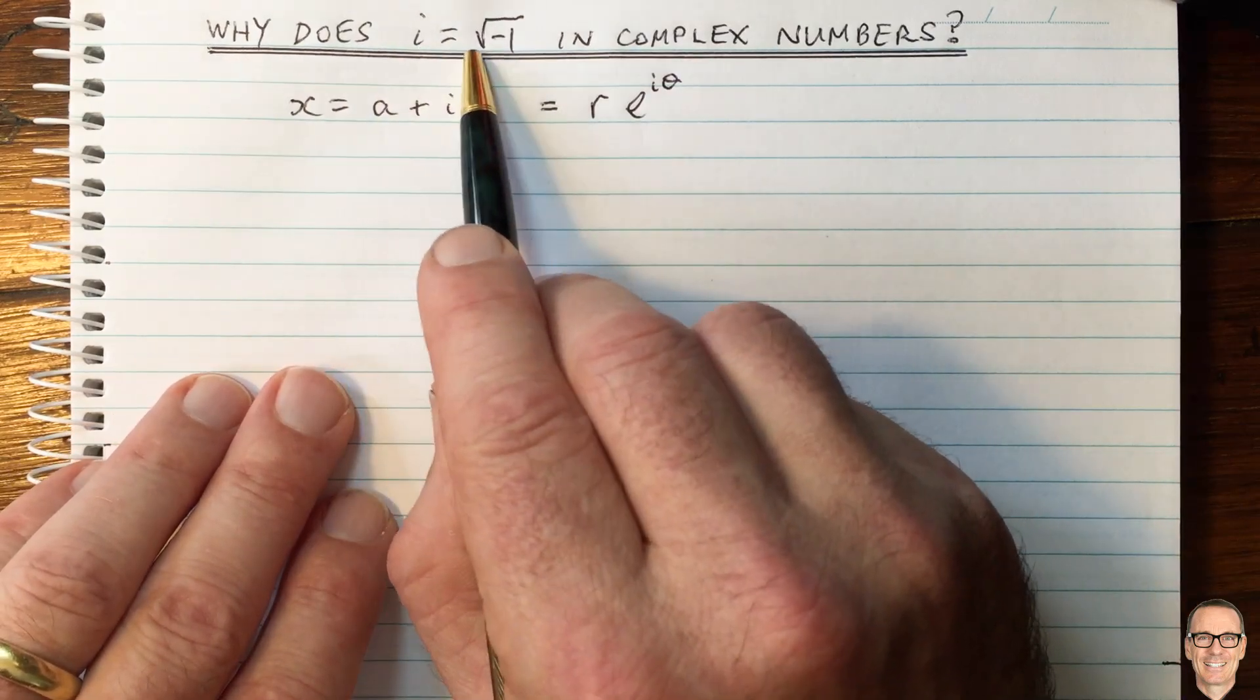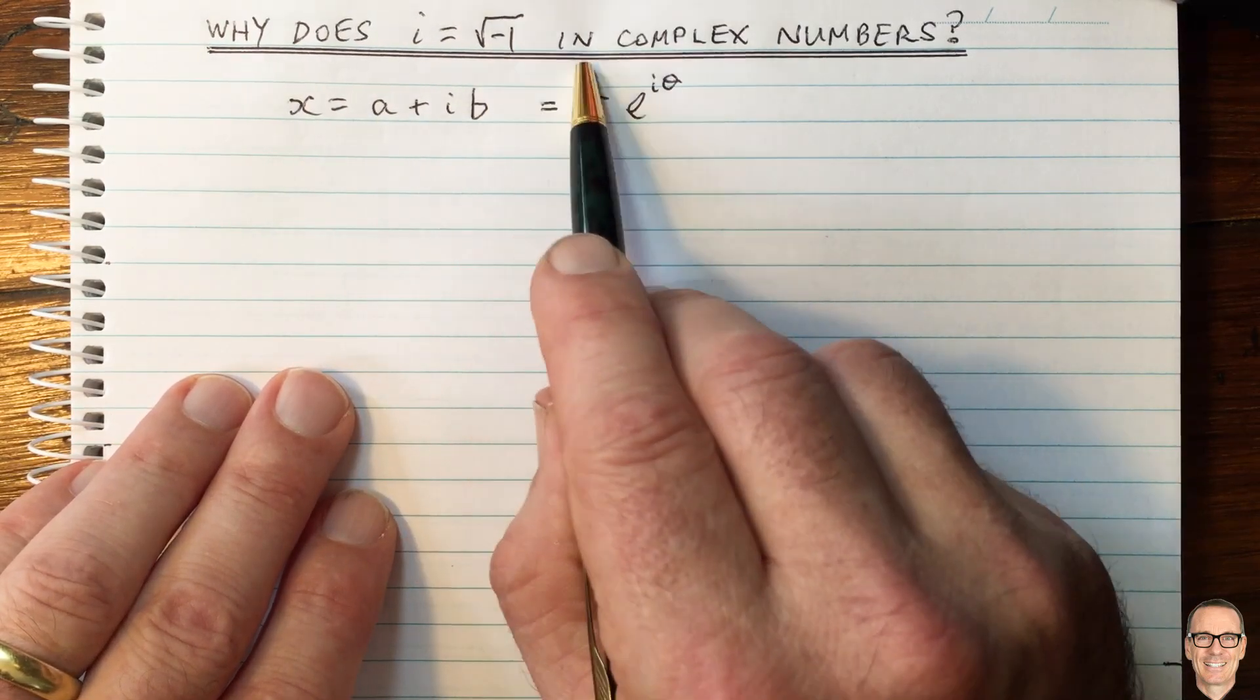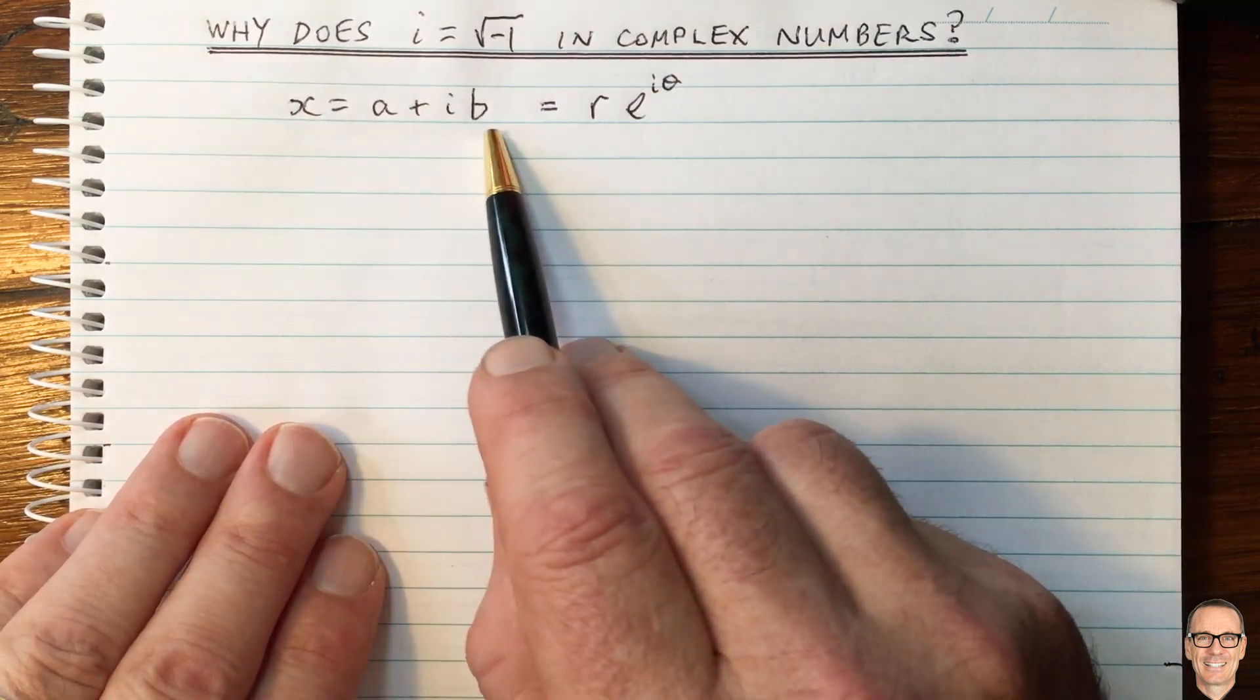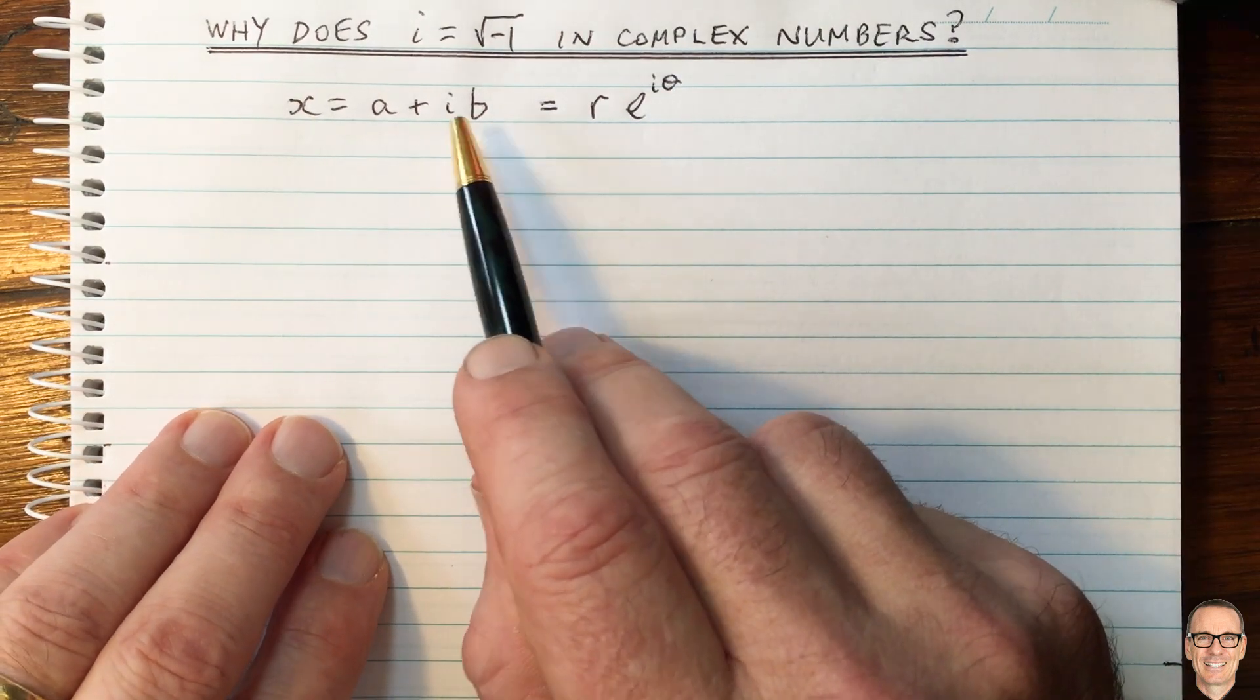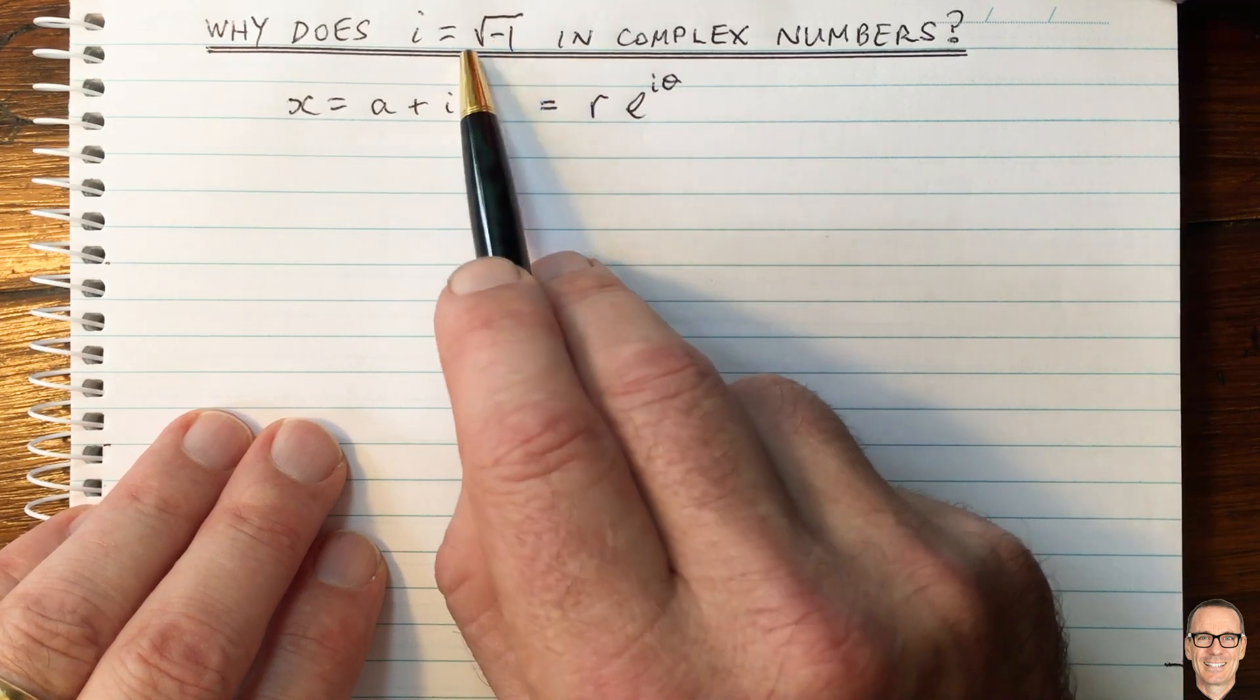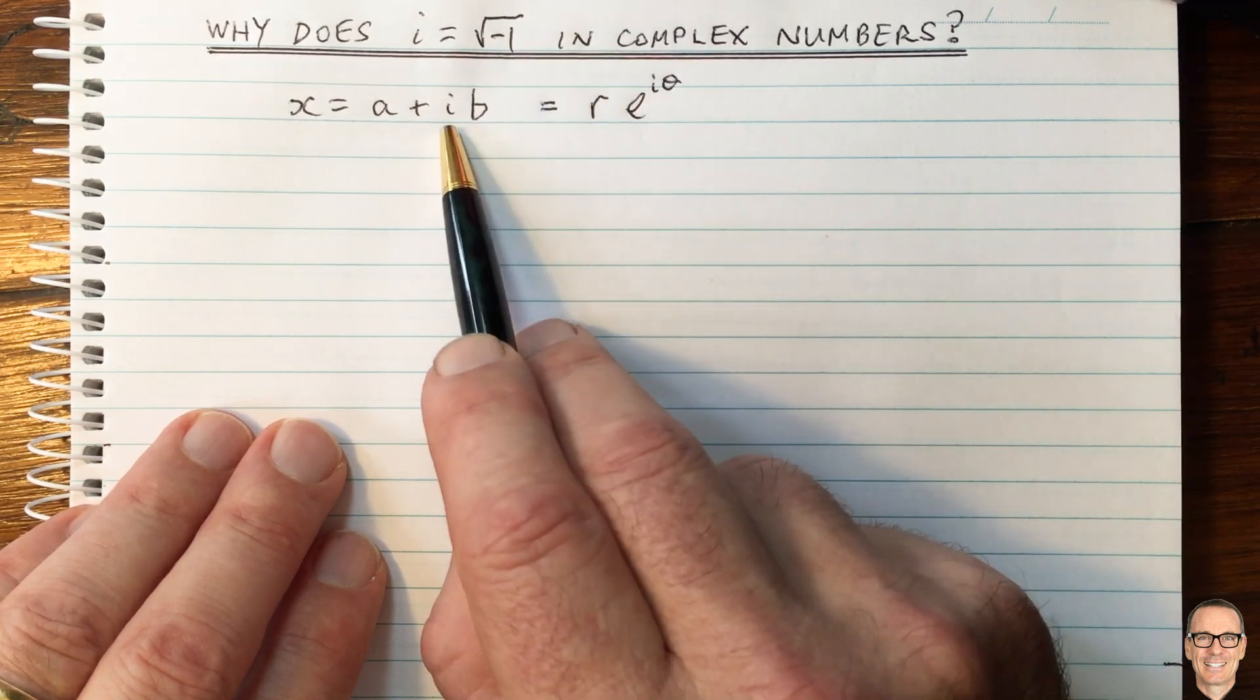Why does i equal the square root of minus 1 in complex numbers? Well, here we have this standard Cartesian representation of a complex number with the real part and the imaginary part, and this is the symbol i that takes this value here, square root minus 1.